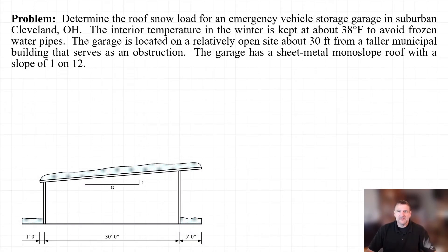Hello. In this example we will be determining the roof snow load for an emergency vehicle storage garage located in suburban Cleveland, Ohio. The garage is kept at an interior temperature of approximately 38 degrees Fahrenheit and is located on a relatively open site about 30 feet from a taller building that would serve as an obstruction.